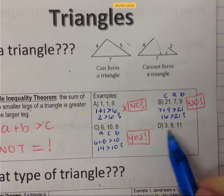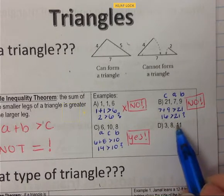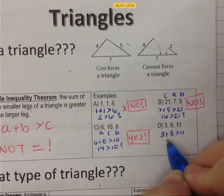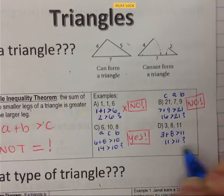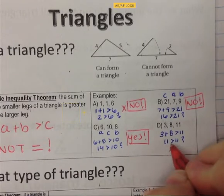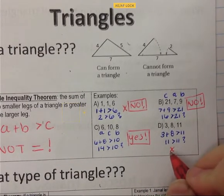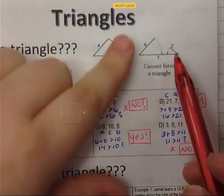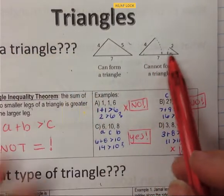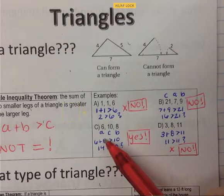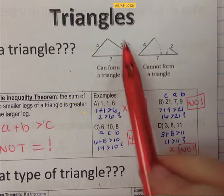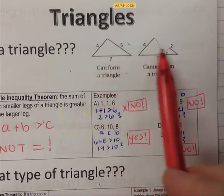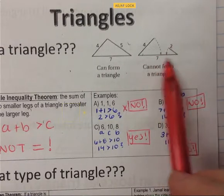The last example: our two smaller sides are 3 (A) and 8 (B), and 11 is C. So 3 plus 8 is 11, and we ask: is 11 bigger than 11? No, it's not. Since it needs to be strictly greater than, this is not a triangle — the two smaller sides would close but form a line on top of the other line. Revisiting the earlier visual: 4 plus 5 is 9, which is bigger than 7, so that forms a triangle. But 4 plus 2 is 6, which is not bigger than 7, so that one will not form a triangle.